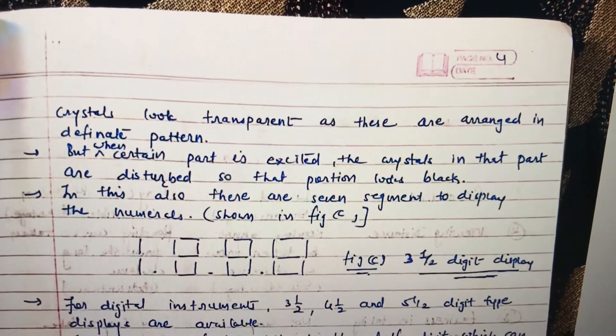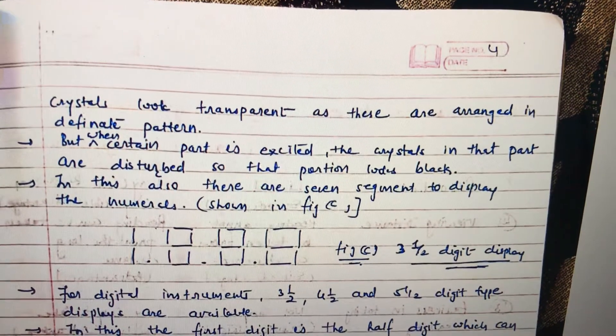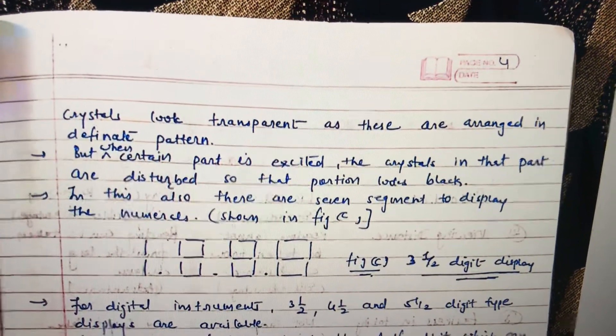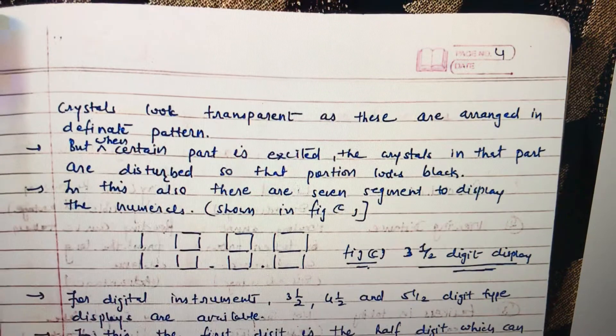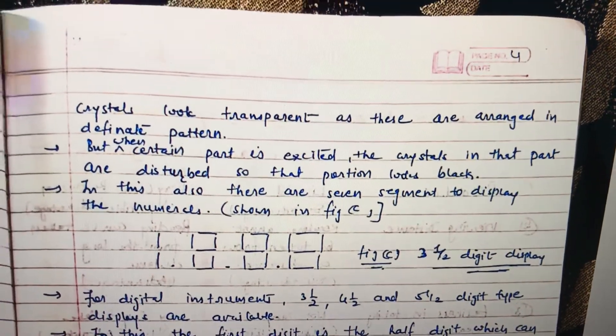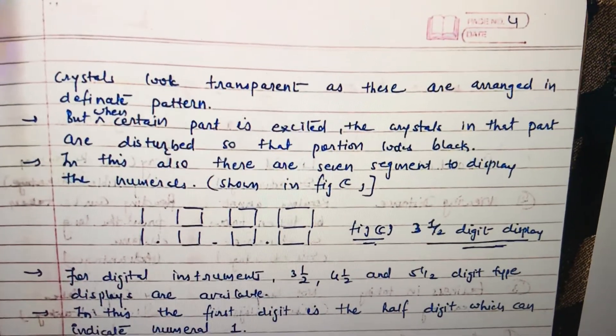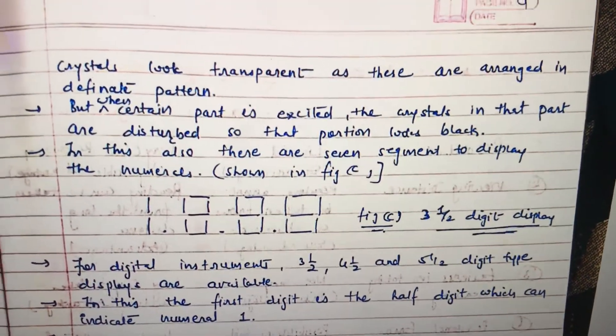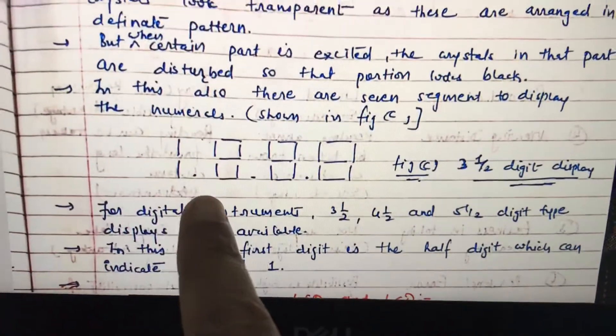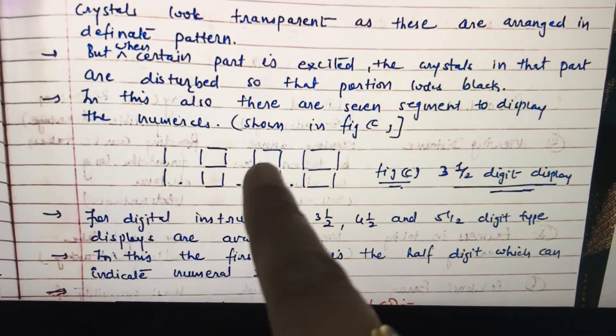The crystal in the part is excited, the crystal in the part is disrupted from the position and looks black. Also there are seven segment displays for the numbers, but it has three and a half digit display.